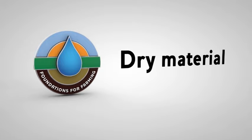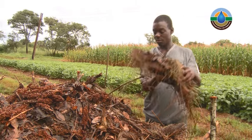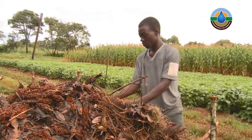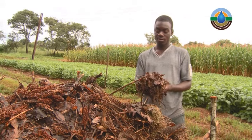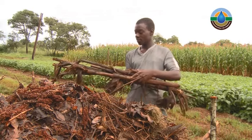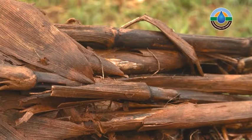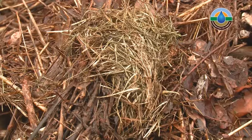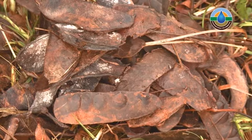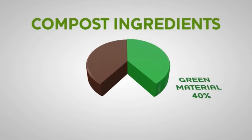Dry material. The dry materials are also important for bacteria and fungi growth. Dry material should also include a percentage of sticks or woody material which allow the compost pile to breathe by giving it structure. Some good examples of dry material are maize stover, leaves, straw or grass sticks and seed pods. The dry or brown material needs to be 40% of our total materials but needs to consist of at least 5-10% of woody materials.